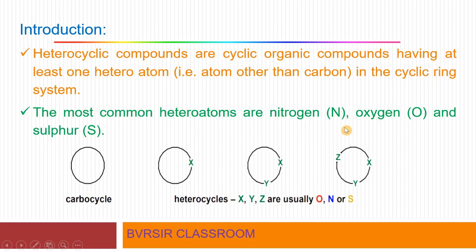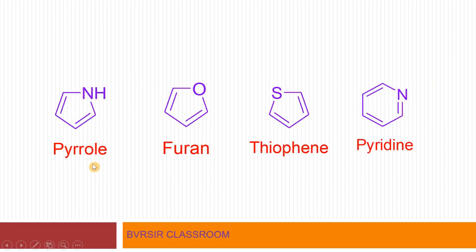This is the introduction regarding heterocyclic compounds. There are many good examples and these have great biological importance — this is chapter 20. Examples include pyrrole, furan, thiophene, and pyridine.